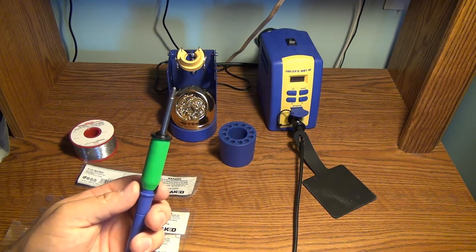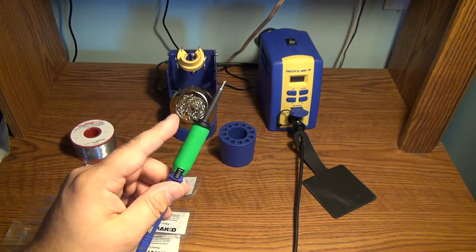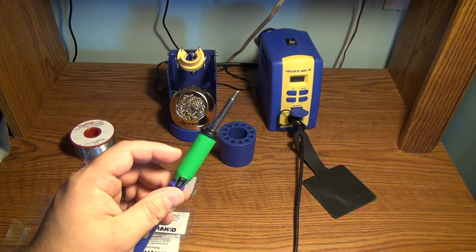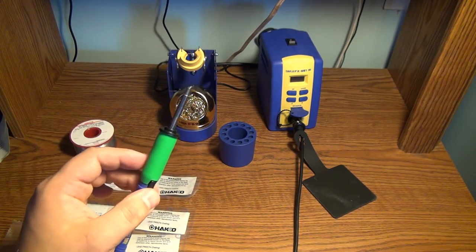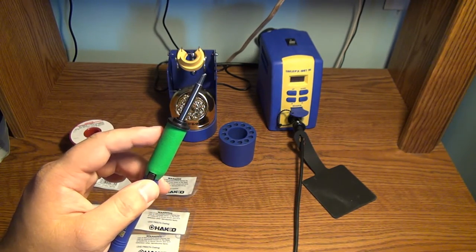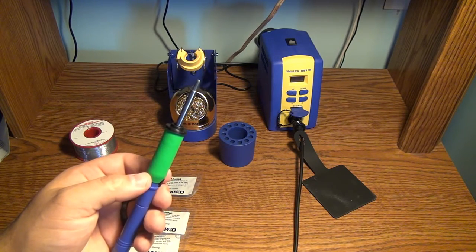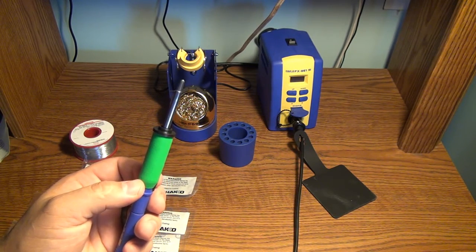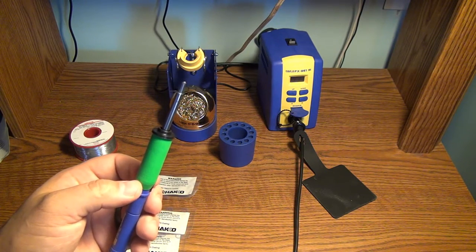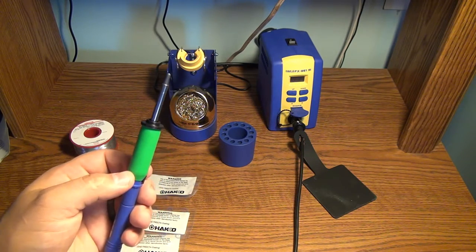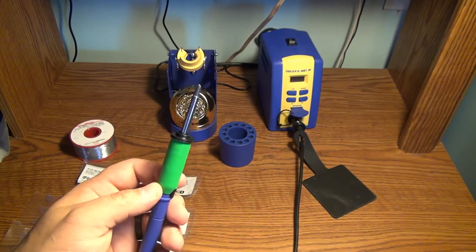Something that Hakko actually advertises, and if you watch some videos about this, is these collars come in four different colors—there's an orange one, a blue one, and I think a yellow one. These are only like six or seven dollars a piece.